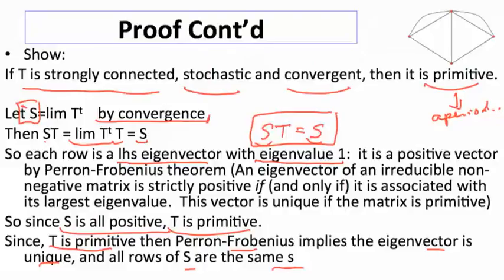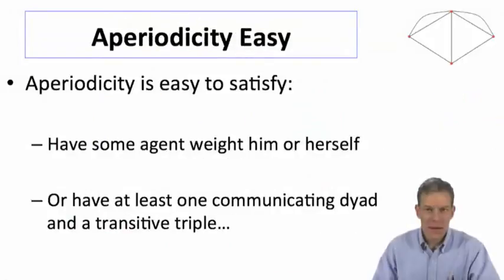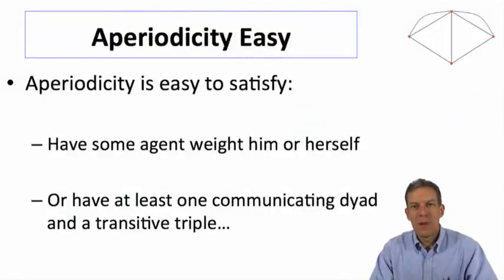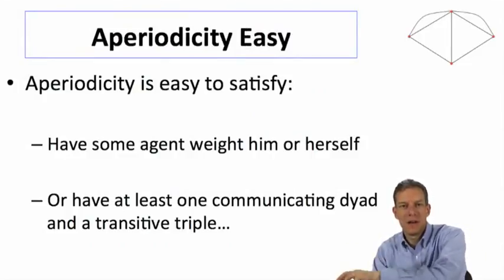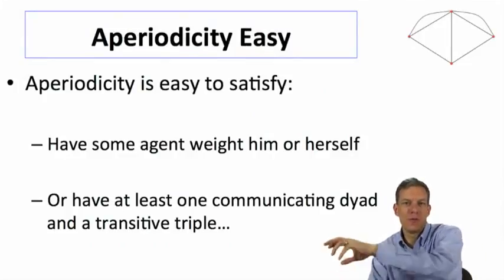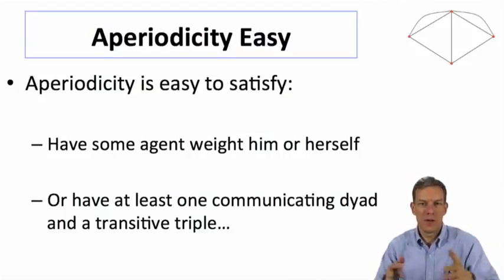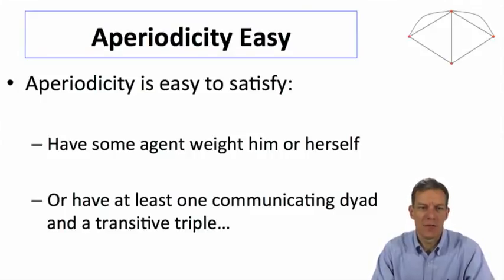Okay, so that wraps up the proof here. What do we learn from this? Basically, convergence is equivalent to aperiodicity. Aperiodicity gives us primitive. That also gives us the convergence, so we know exactly what we're converging to, which is the left-hand side eigenvalue. Nice thing is aperiodicity is very easy to satisfy in this world.